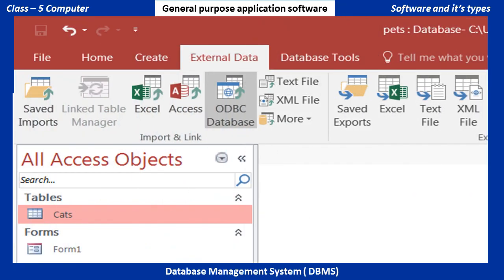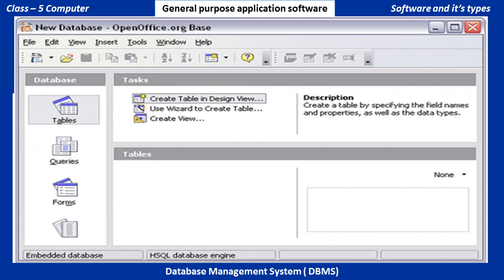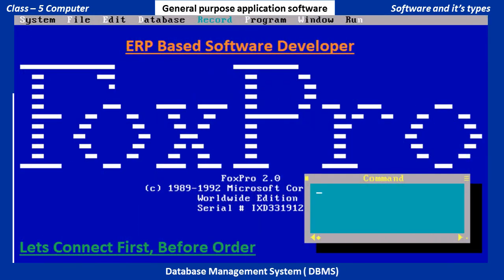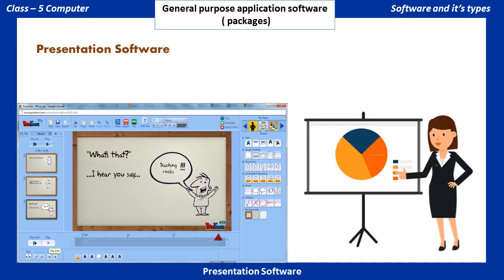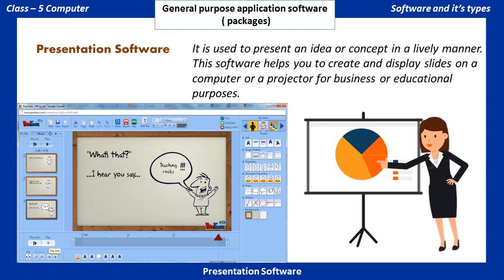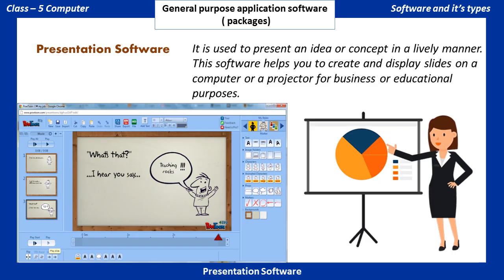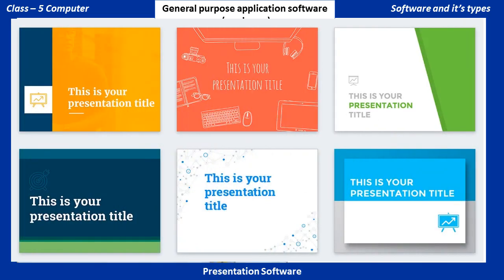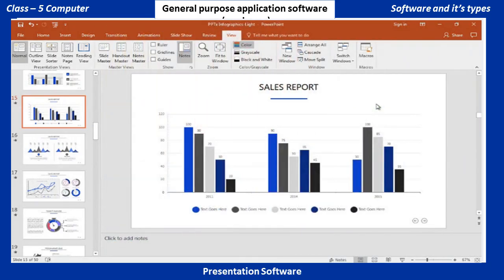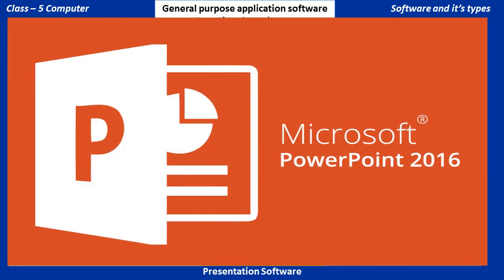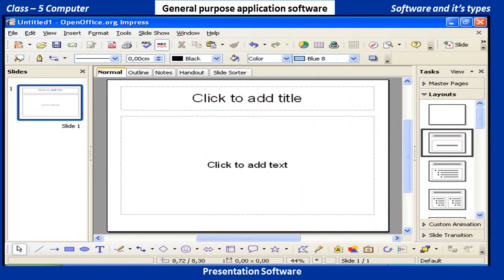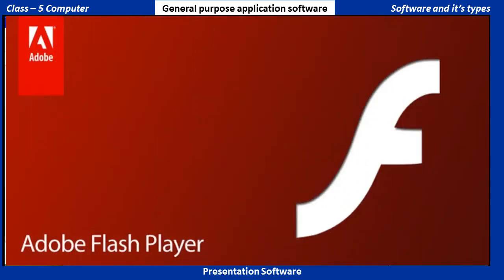Examples of database software include Microsoft Access, OpenOffice.org Base, FoxPro, and Oracle. Presentation Software: It is used to present an idea or concept in a lively manner. This software helps you to create and display slides on a computer or projector for business or educational purposes. It lets you create slides, charts, animation, and video clips. Examples include Microsoft PowerPoint, OpenOffice.org Impress, and Adobe Flash.